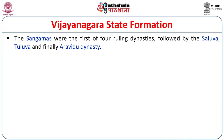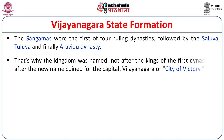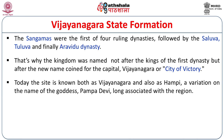The Sangamas were the first but not the only dynasty. There were four ruling dynasties in total: the Sangamas were followed by Saluva, Tuluva, and finally the Aravidu dynasty. The kingdom was named not after the Sangamas but after the capital, Vijayanagara, meaning the city of victory. Today the site is known both as Vijayanagara and as Hampi, a variation of the goddess Pampa Devi, long associated with the region.